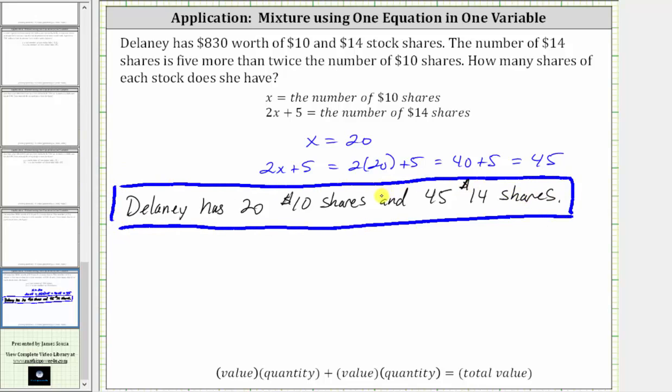Before we go, let's verify our solution by verifying the value equation below, which is $10 times 20 shares, plus $14 times 45 shares is equal to $830.